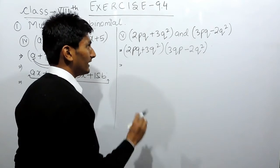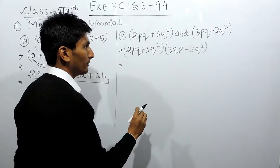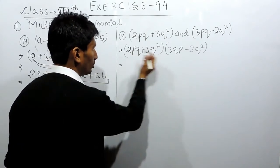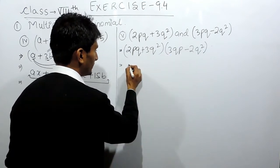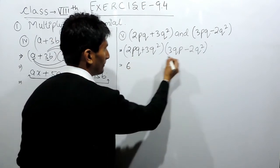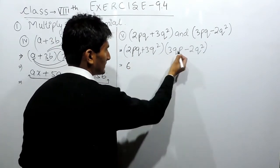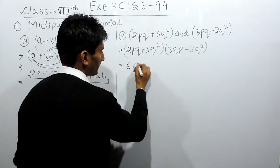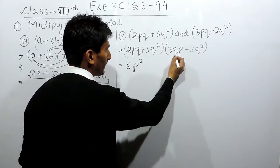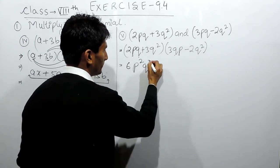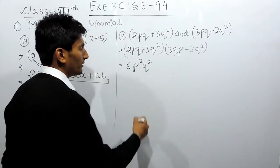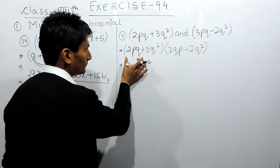So 2 multiplied by 3 is 6. This p multiplied by p — base is same, so powers will be added — giving p². And q multiplied by q — base is same, powers will be added. Sorry, powers will be added.